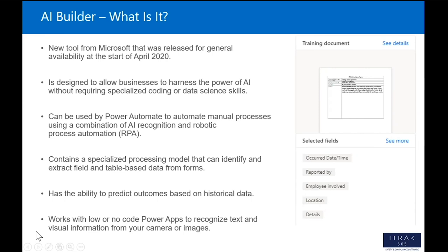The next technology is AI Builder. It's a new tool from Microsoft, released for general availability at the start of April 2020. It's designed to allow businesses to harness the power of AI without requiring specialized coding or data science skills. It plugs into Power Automate and can be used to automate manual processes using a combination of AI recognition and robotic process automation. It also contains a specialized processing model that can identify and extract field and table-based data from forms — this is the part we'll be using in the demo.